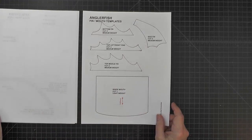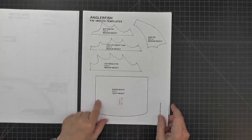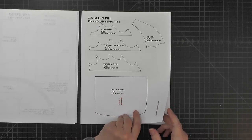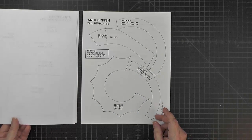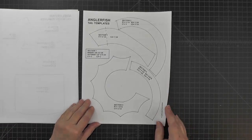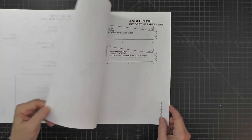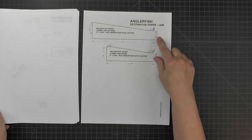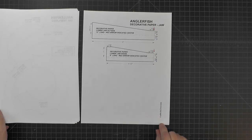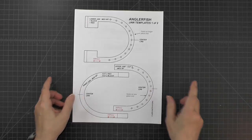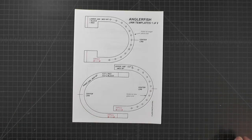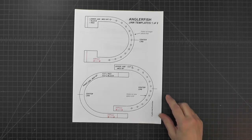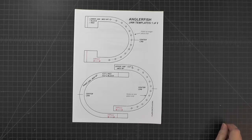There's two pages for doing the jaw and then a page that has the head, and then a page that has not only the fins but the inside piece that goes inside of the mouth. Then we have all of our tail templates and then finally this is decorative paper for the jaw.